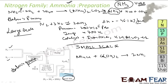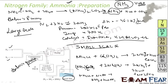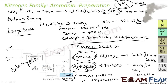Instead of Ca(OH)2 we can also use NaOH. So take (NH4)2SO4 and react with NaOH — it gives NH3 gas, water, and Na2SO4. If you use NH4Cl plus NaOH, it gives NH3 plus H2O plus NaCl. So you use ammonium salt with caustic soda or lime to get NH3.